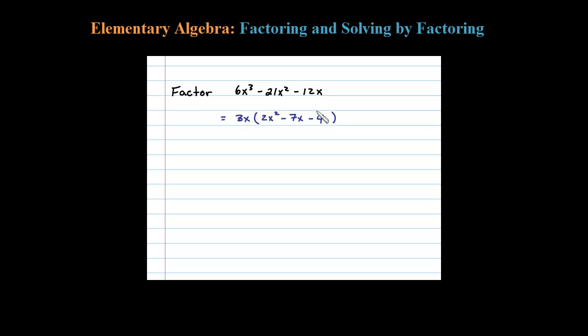Now it looks like we could factor the resulting trinomial, so let's put in two blank binomials and factor this. 2x² factors as 2x times x. Now 4 breaks up as 1 times 4, or 2 times 2. I'm going to use 1 times 4.